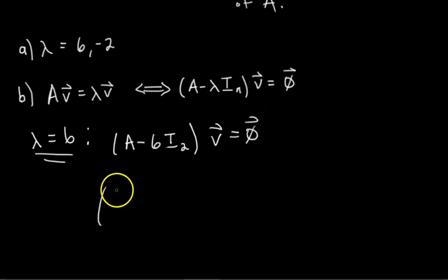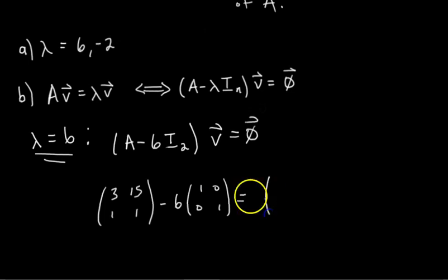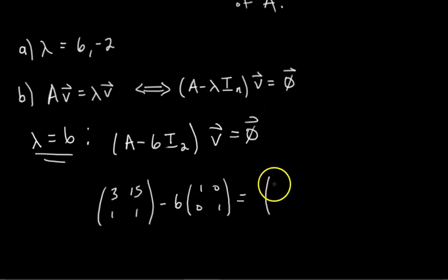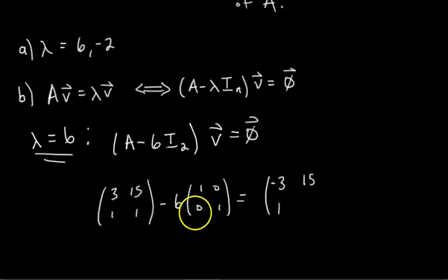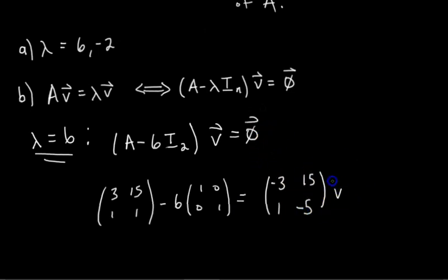A minus 6I₂ is the matrix [3, 15; 1, 1] minus 6 times [1, 0; 0, 1]. We're just taking away 6 from the top-left and bottom-right entries. So the top-left entry is 3 minus 6 equals negative 3, giving us the matrix [-3, 15; 1, -5]. We're doing this times V equals 0 — that is, A minus lambda I_n times V equals 0.